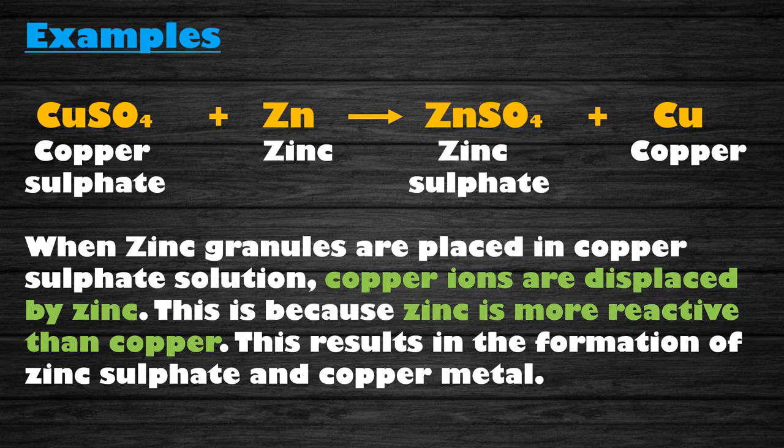When zinc granules are placed in copper sulphate solution, copper ions are displaced by zinc. This is because zinc is more reactive than copper. This results in the formation of zinc sulphate and copper metal. The chemical equation for the reaction has been shown above.